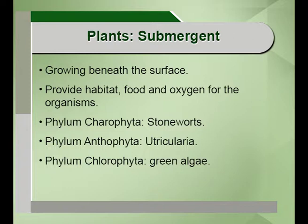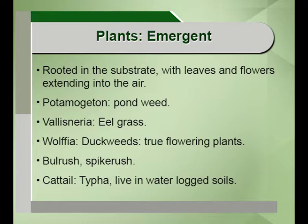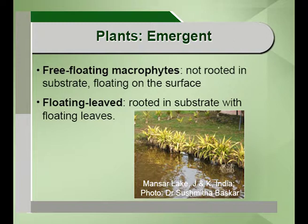Emergent plants include pondweed, eelgrass, Vallisneria, Wolffia or duckweeds. They are true flowering plants and Typha also lives in waterlogged soils. In addition, we find free-floating macrophytes and floating-leaved plants which can be rooted or unrooted in the aquatic system.